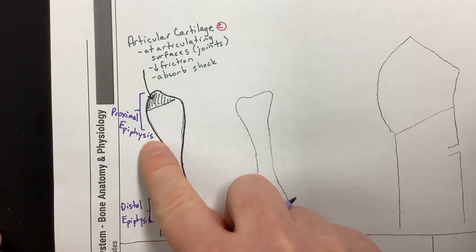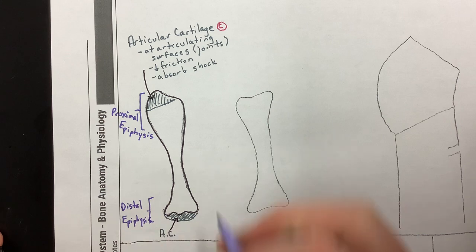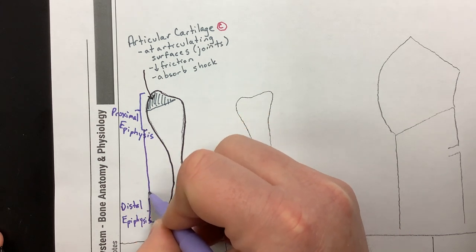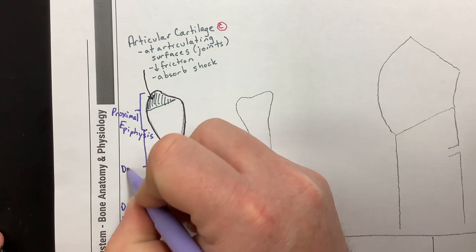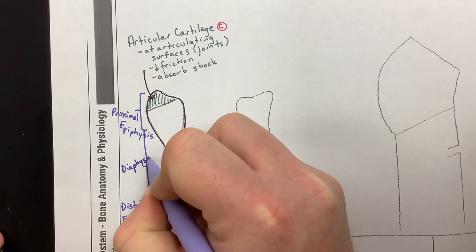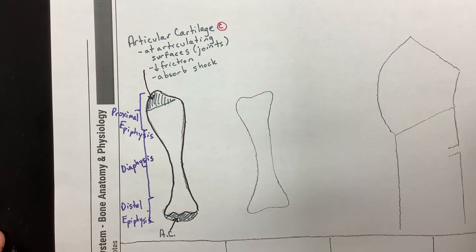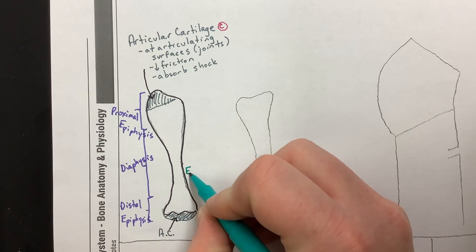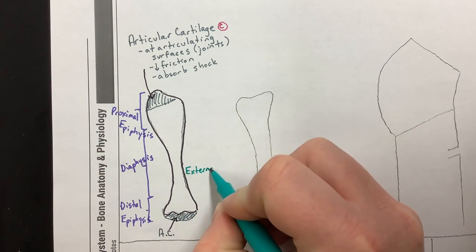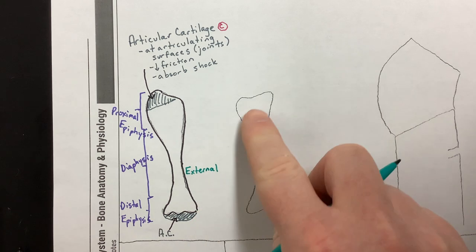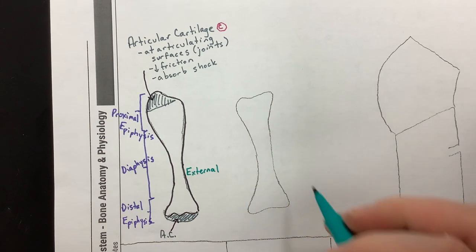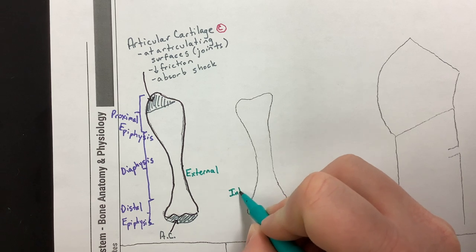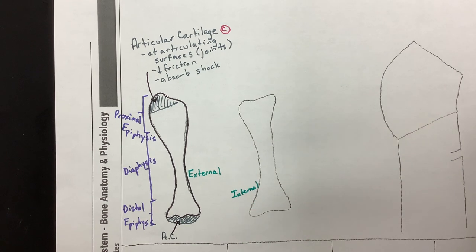The proximal epiphysis is the end closer to the body; the distal epiphysis is the end further away. The middle part of the bone is called the diaphysis. So: two epiphyses on either end and a diaphysis in the middle — that is the external anatomy of the bone. Now if you sawed a bone in half longitudinally, you'd see there's a lot going on inside as well — the internal anatomy.